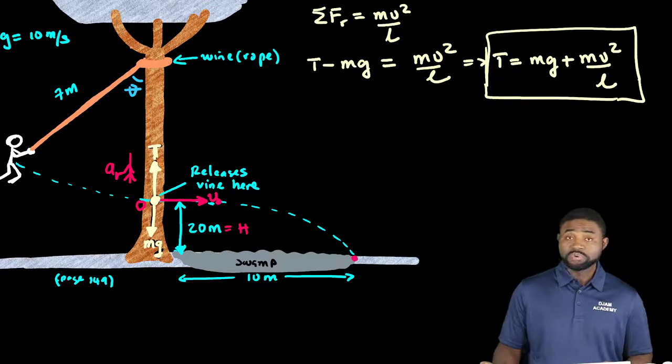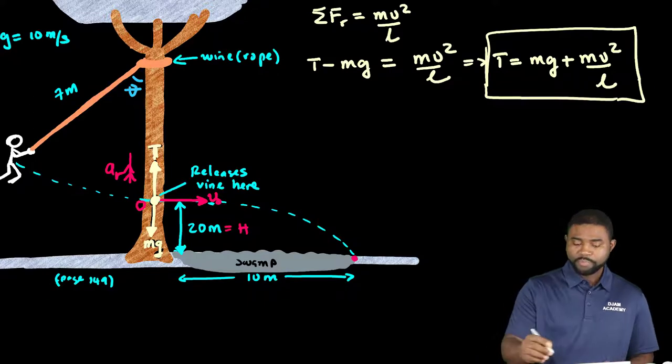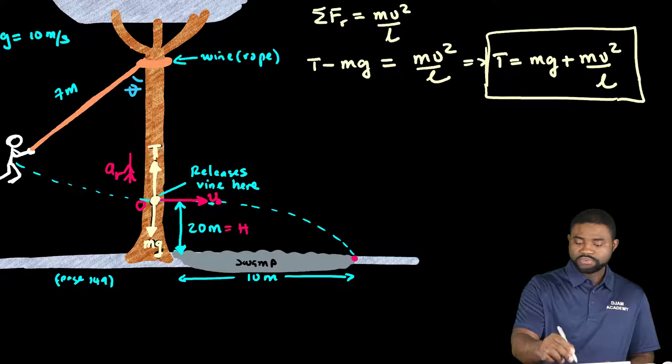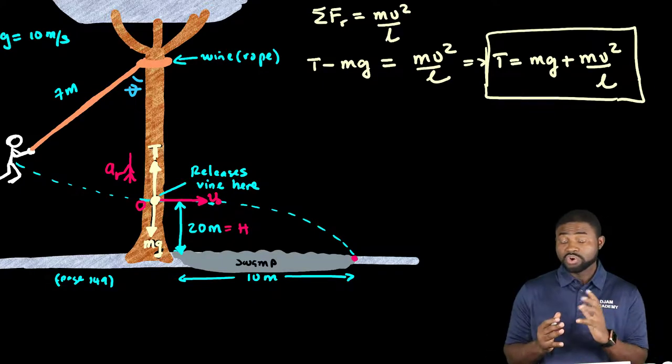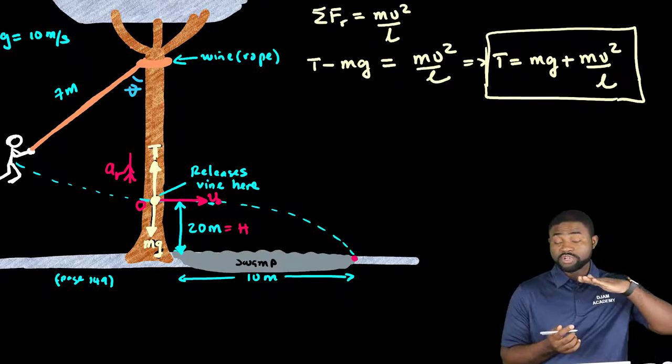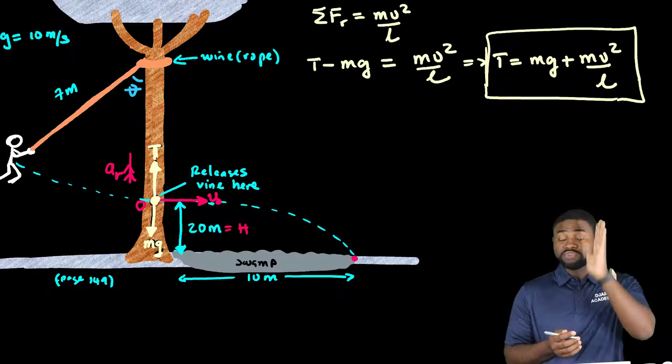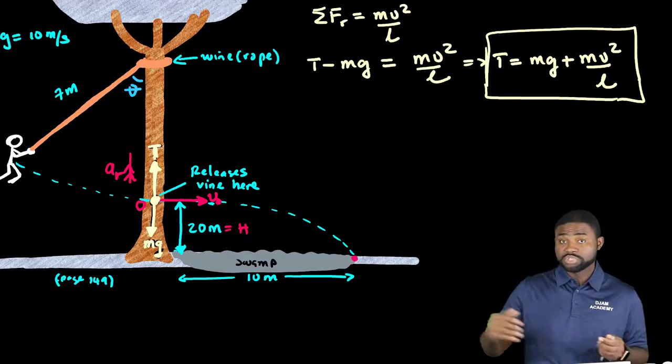But the only problem is we don't know what value the velocity at that moment is so we have to calculate it. Now if that is the case keep in mind that when he lets go of the rope he has just a horizontal velocity. His vertical velocity is zero. That explains why he projects himself like a projectile.